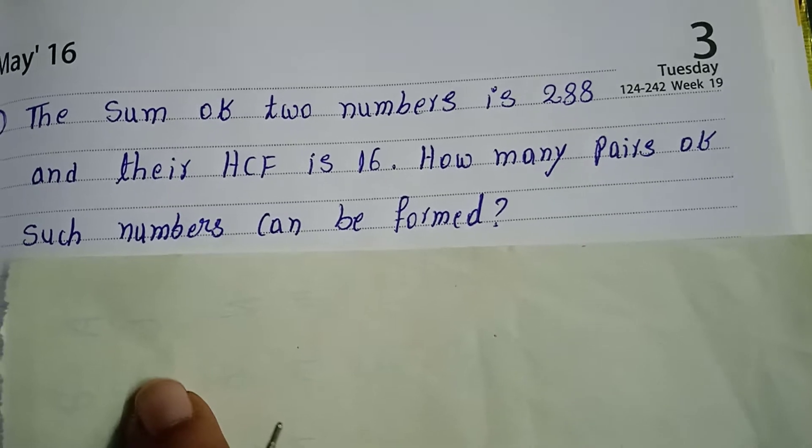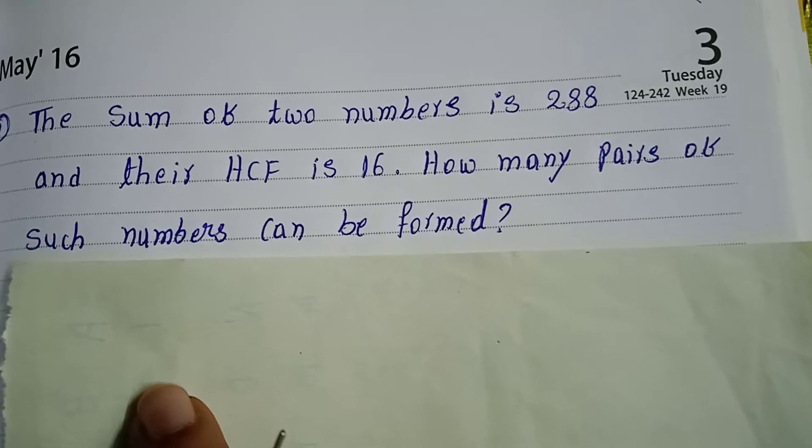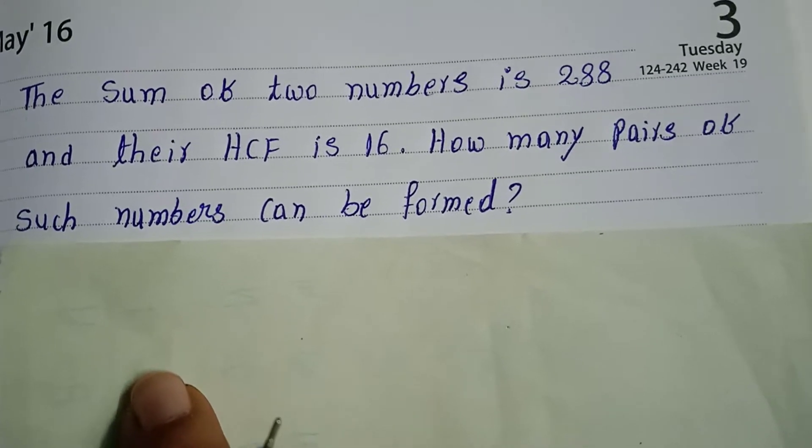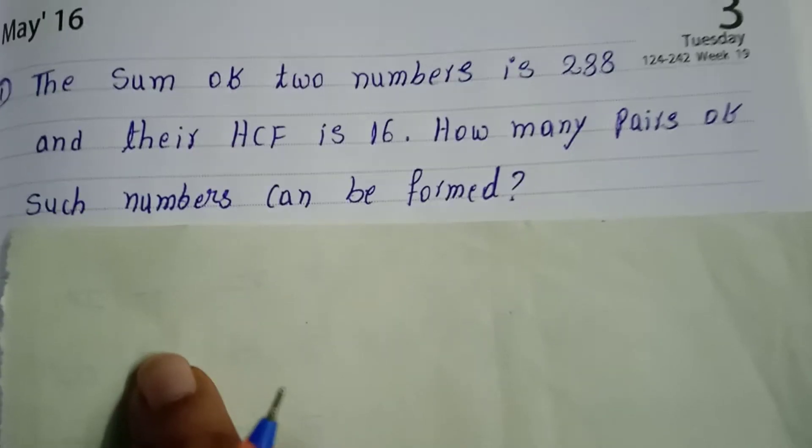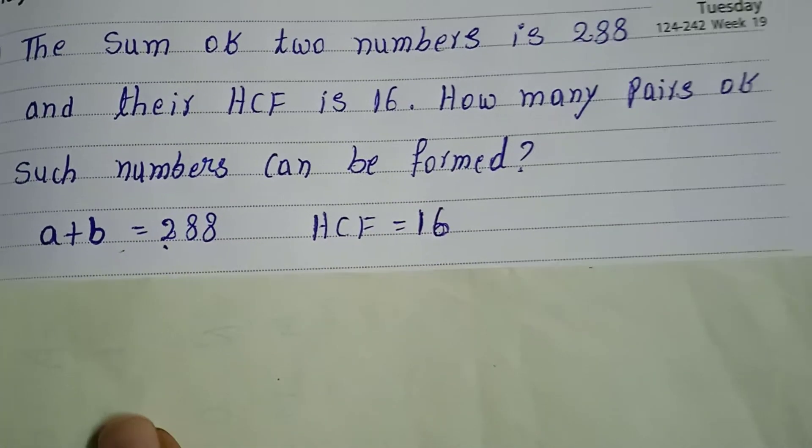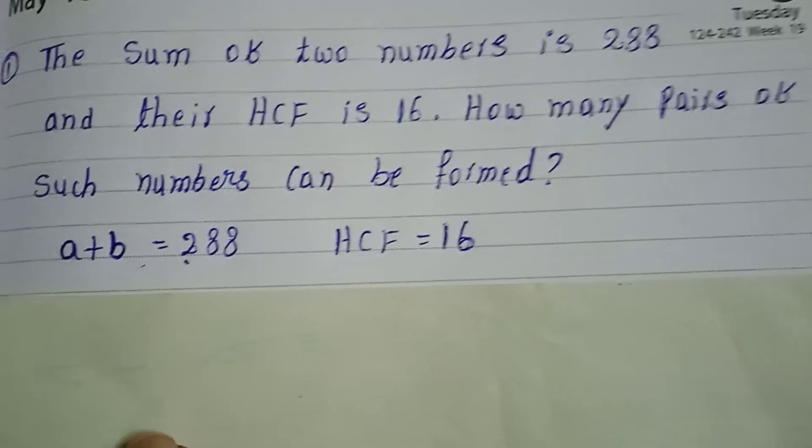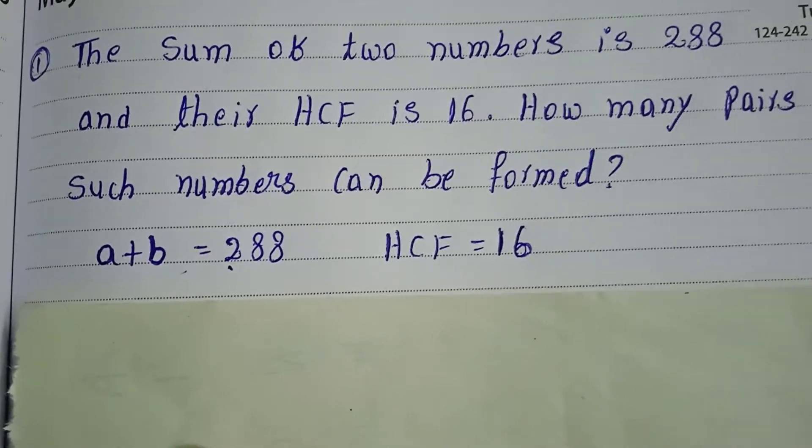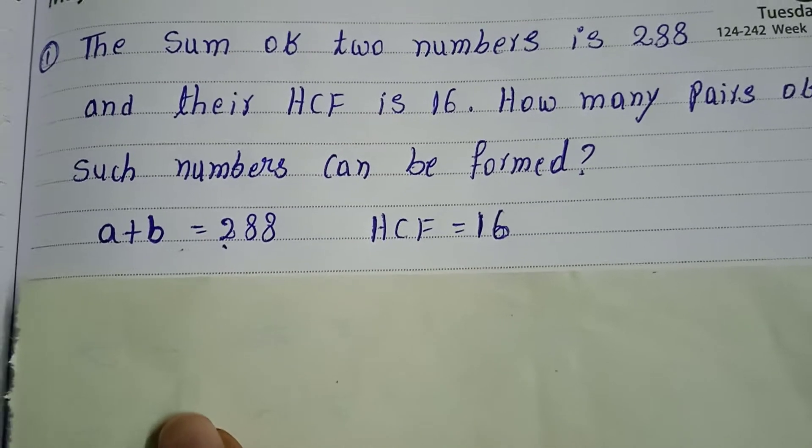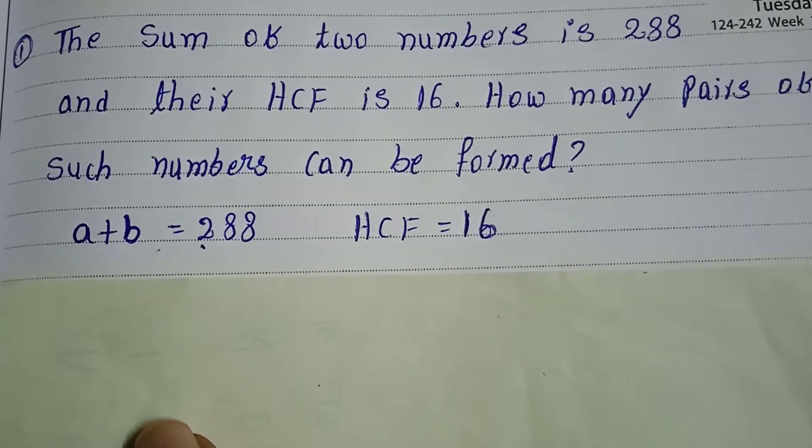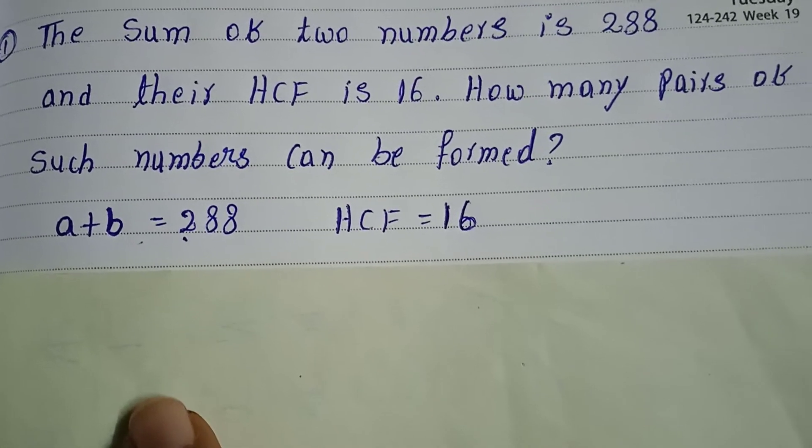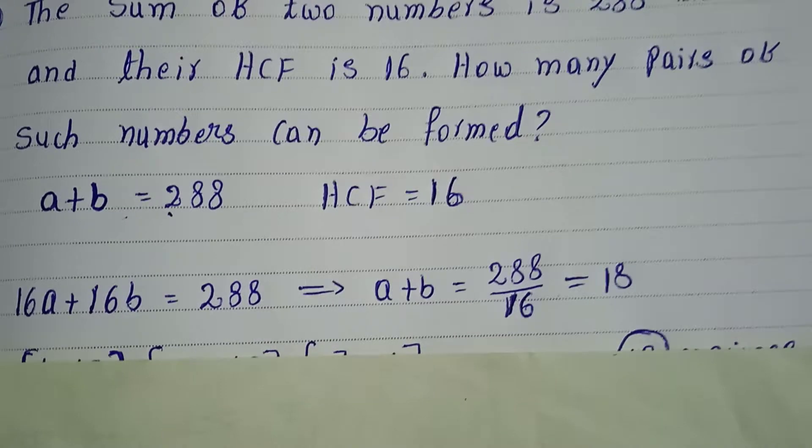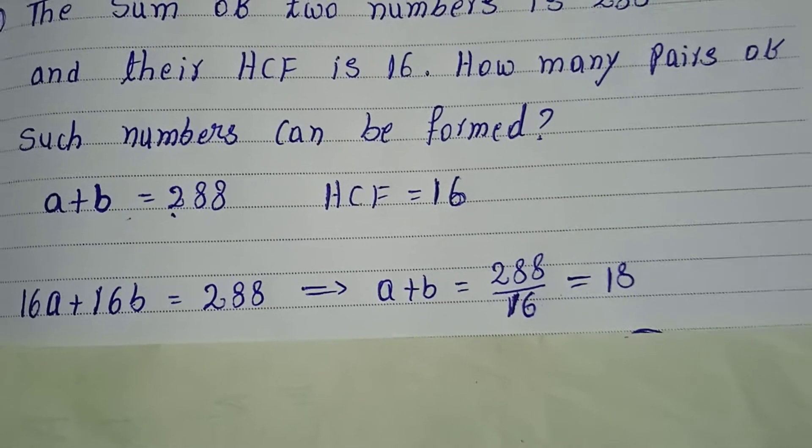Let's take the two data: a plus b equals 288 and HCF equals 16. So a and b are both multiples of 16. We can write them as 16a plus 16b. Therefore, a plus b equals 288 divided by 16, which equals 18.